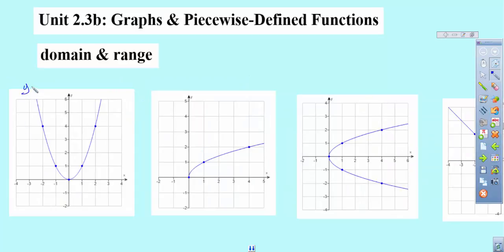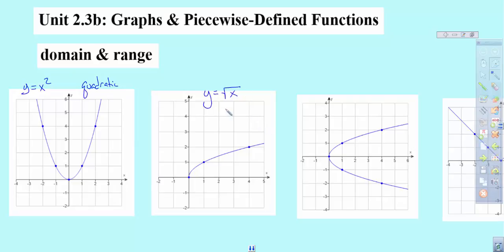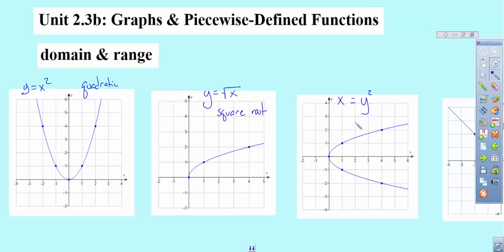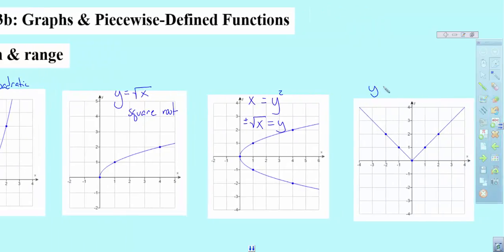This next one is y equals x squared, called a quadratic. The inverse of that is called a square root, so this would be y equals the square root of x — a square root function. This sideways graph would be x equals y squared. When you solve that, you get plus or minus the square root of x equals y, which is why we get one branch on top and one on the bottom. The next one is y equals the absolute value of x — an absolute value function.